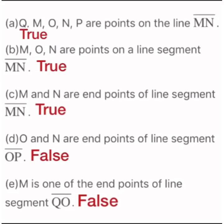On line MN, if extended from point M and point N we have Q and P as two points, so Q, M, O, N, P are points on line MN — TRUE. Statement 2: M, O, N are points on line segment MN — TRUE, because M and N are the two end points and O is the midpoint of line segment MN.